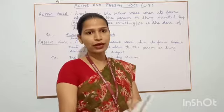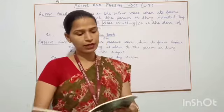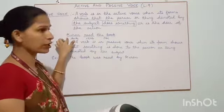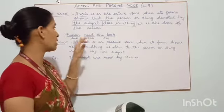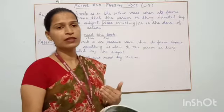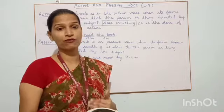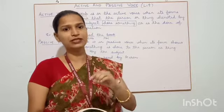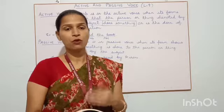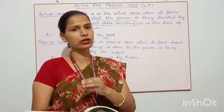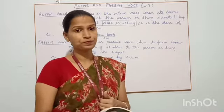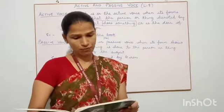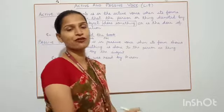Now, when we talk about passive voice — remember, in active voice, the doer of the action is important. Your subject is important. When we want to tell somebody about the subject, we generally use active voice. When there is no importance of the subject or the doer of the action — only the action is important — then we say we are using passive voice. We can use passive voice in sentences where only the action is important and the doer is not important.